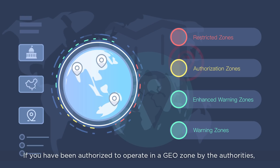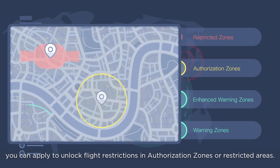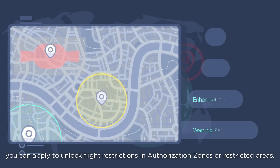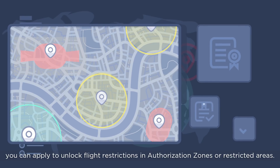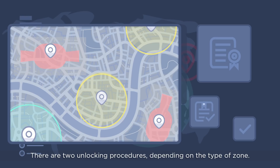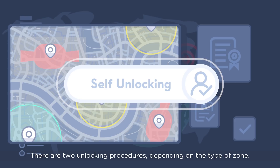If you have been authorized to operate in a GeoZone by the authorities, you can apply to unlock flight restrictions in authorization zones or restricted areas. There are two unlocking procedures, depending on the type of zone.